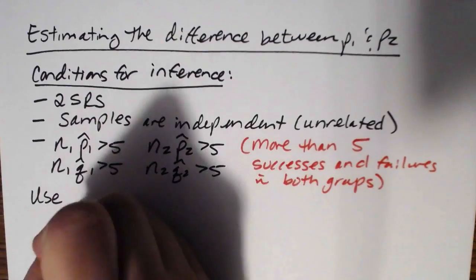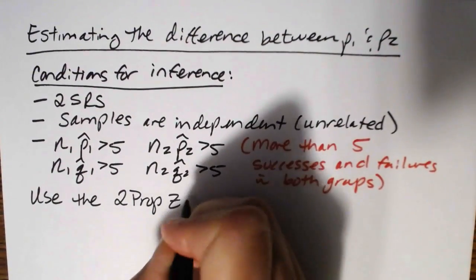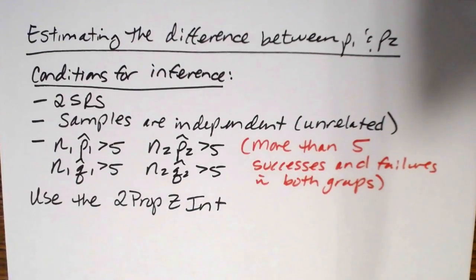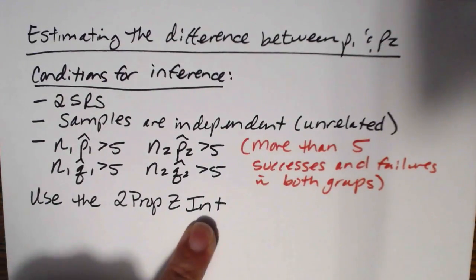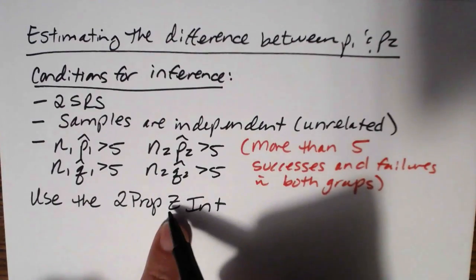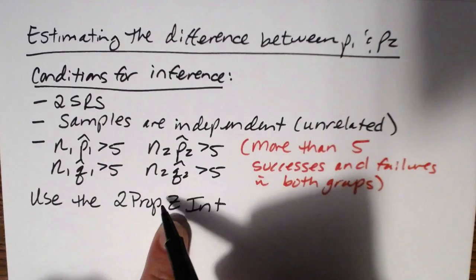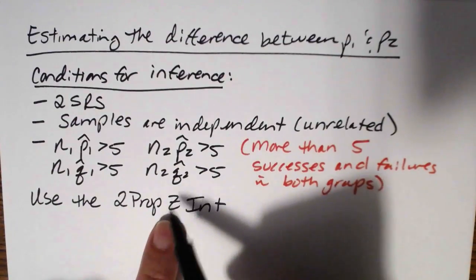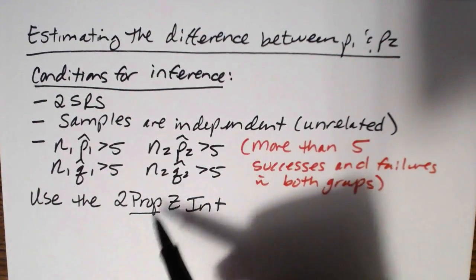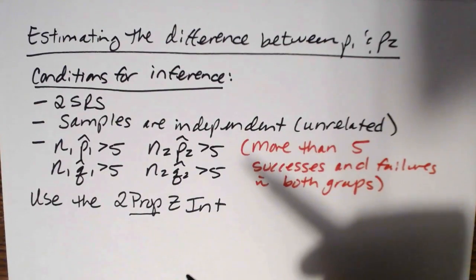In the calculator we will use the 2-PropZInt. '2-Prop' reflects that we're dealing with two proportions — two separate groups — and 'Int' is because we're finding a confidence interval. As long as our conditions are met, we know that the p-hat distributions are normal, so it's going to be based on the z. Because these are proportions, you don't have to choose between z and t — proportions are always based on the z.